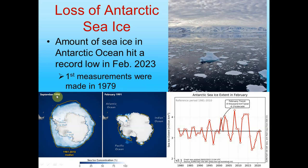Antarctic sea ice hit a record low in February 2023 — the lowest since measurements began in 1979. Sea ice is the ice floating on top of the water, not part of the ice sheet itself. Comparing the median ice extent from 1981 to 2010 against recent measurements shows dramatic losses. Going back to 1980, while there's some cyclic year-to-year variation, the overall downward trend is clear as the oceans warm.